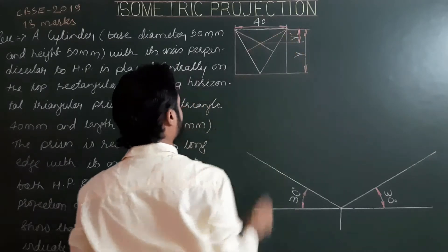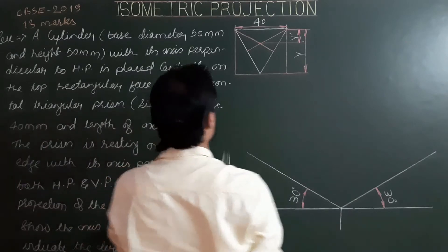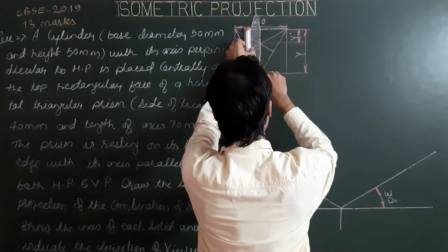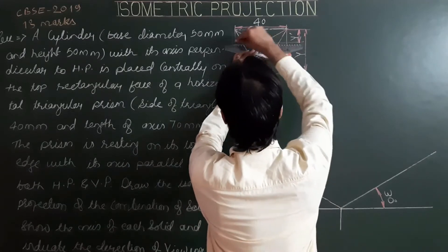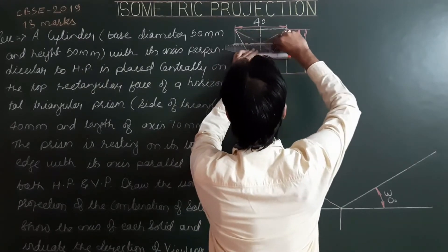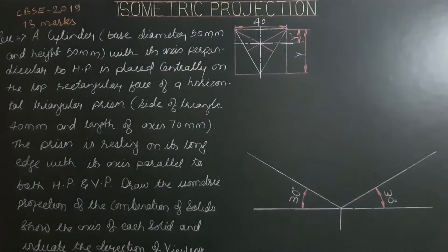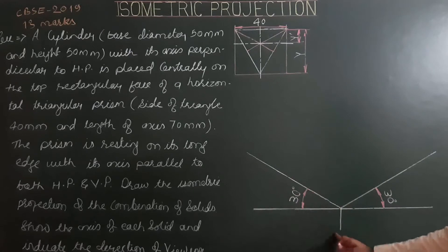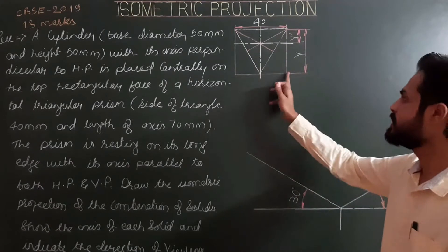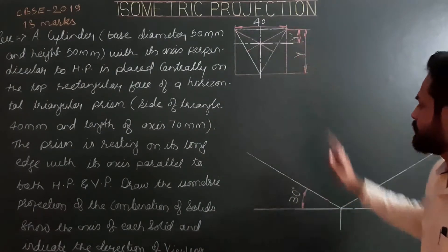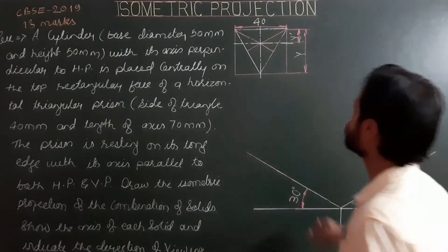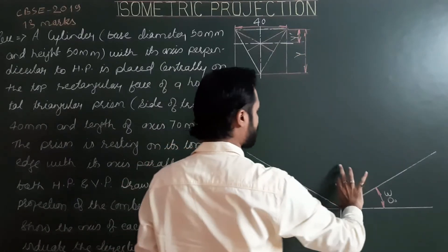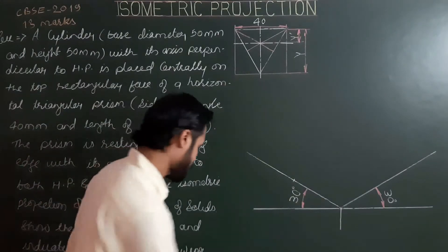From the center, draw center lines parallel and perpendicular to the first waist side. Now we have to project this helping figure along the second and vertical isometric axes. We take 40 along the second isometric axis and Y along the vertical isometric axis — 40 along the second isometric axis and Y along the vertical axis.